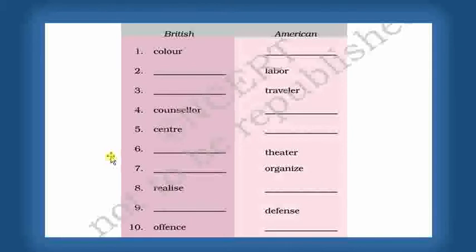Next: Counsellor. In British English it is C-O-U-N-S-E-L-L-O-R, and in American English it is C-O-U-N-S-E-L-O-R — with only one L before O-R.